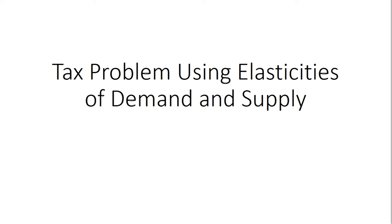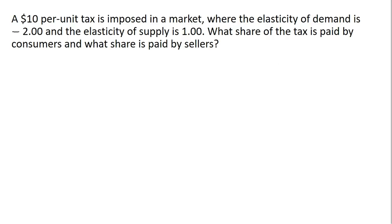In this video, we're going to do a tax problem that uses elasticities of demand and supply. A $10 per unit tax is imposed in a market where the elasticity of demand is minus 2 and the elasticity of supply is 1.